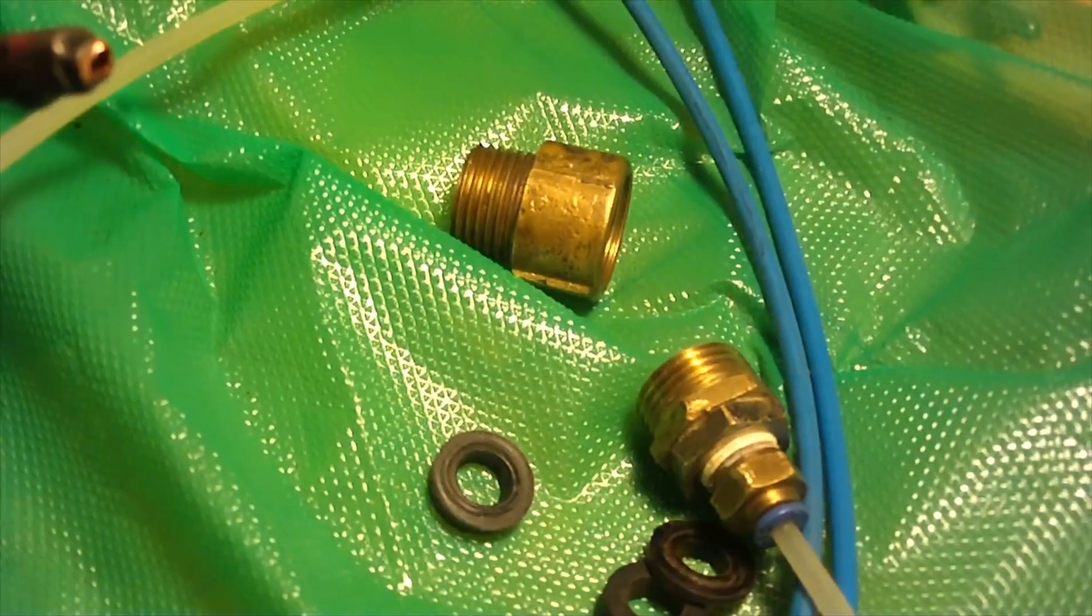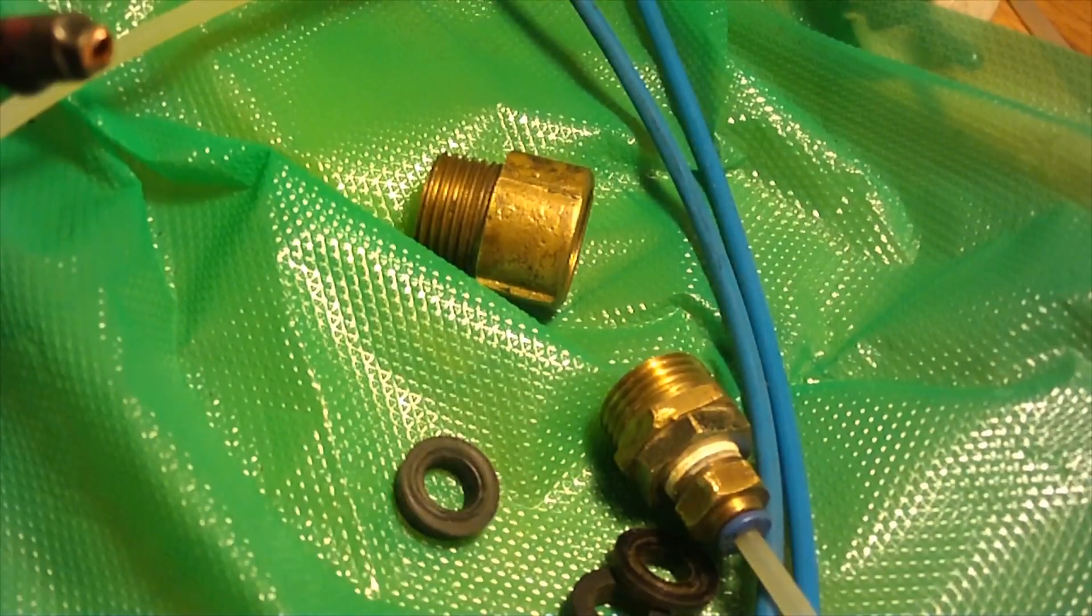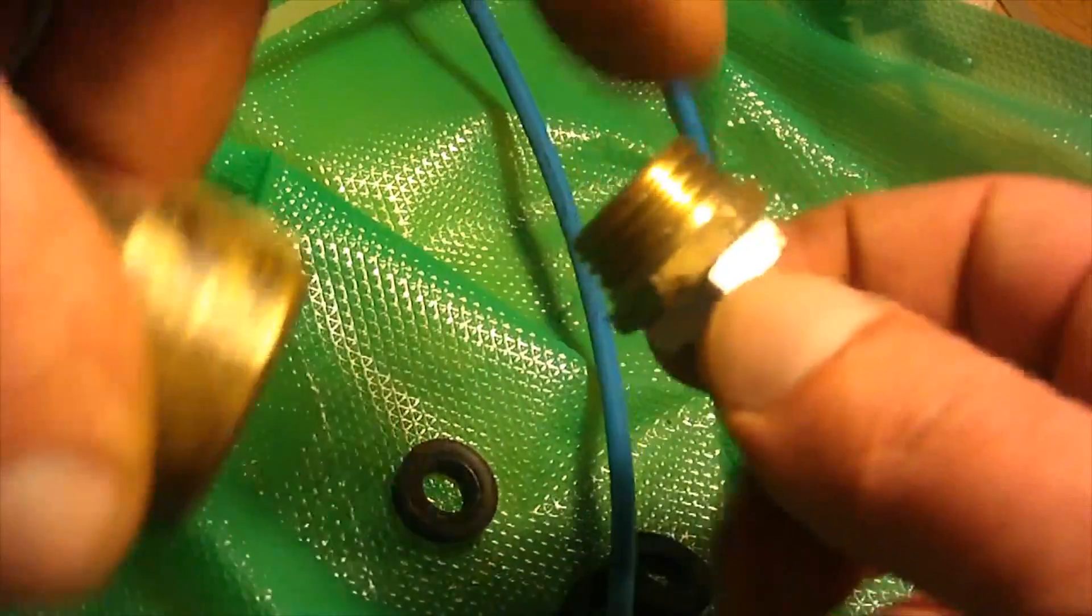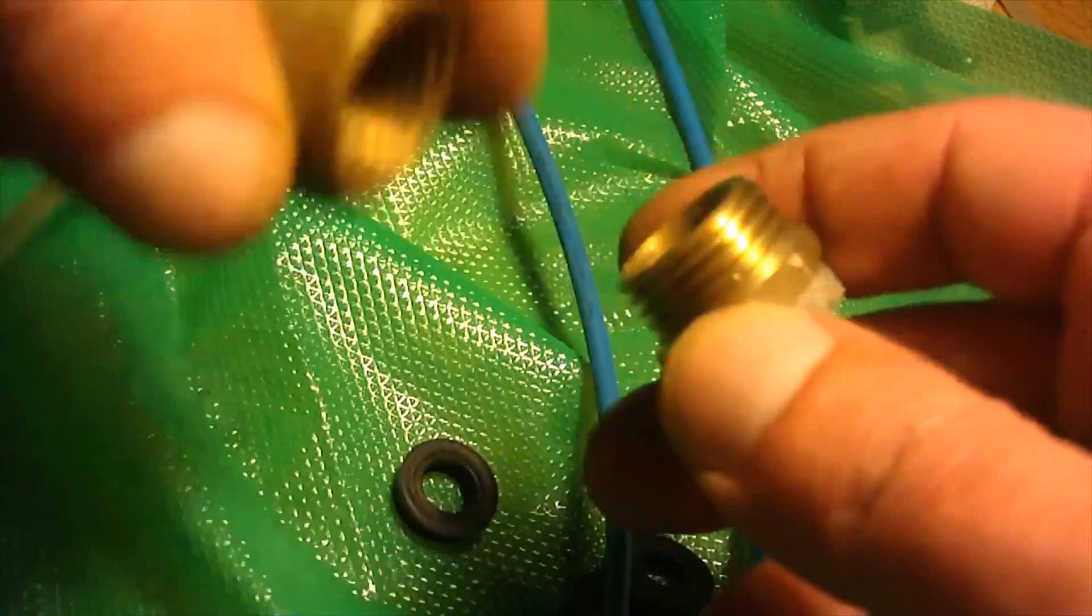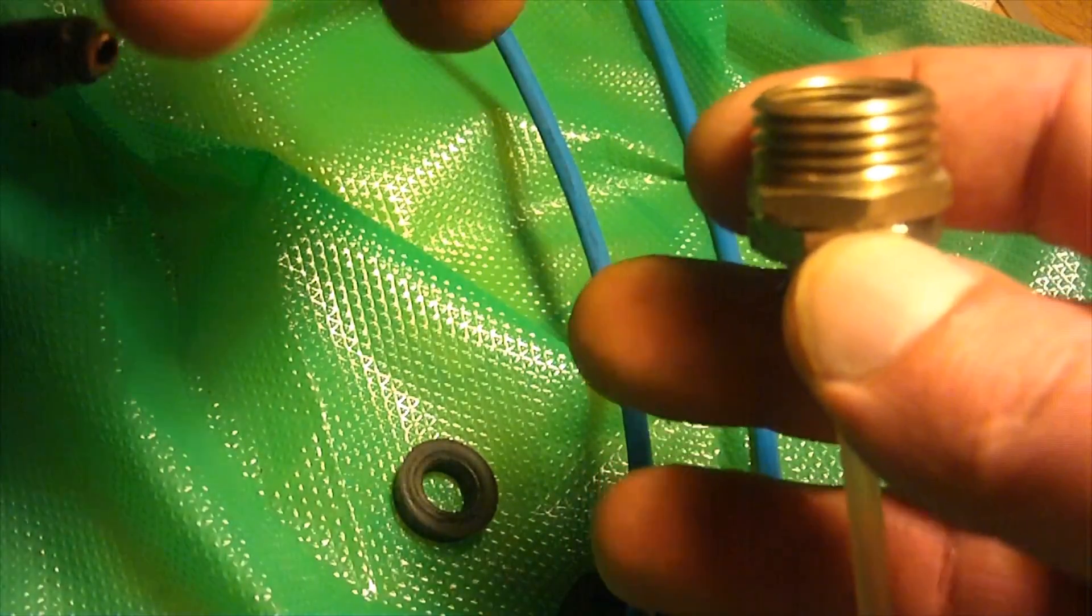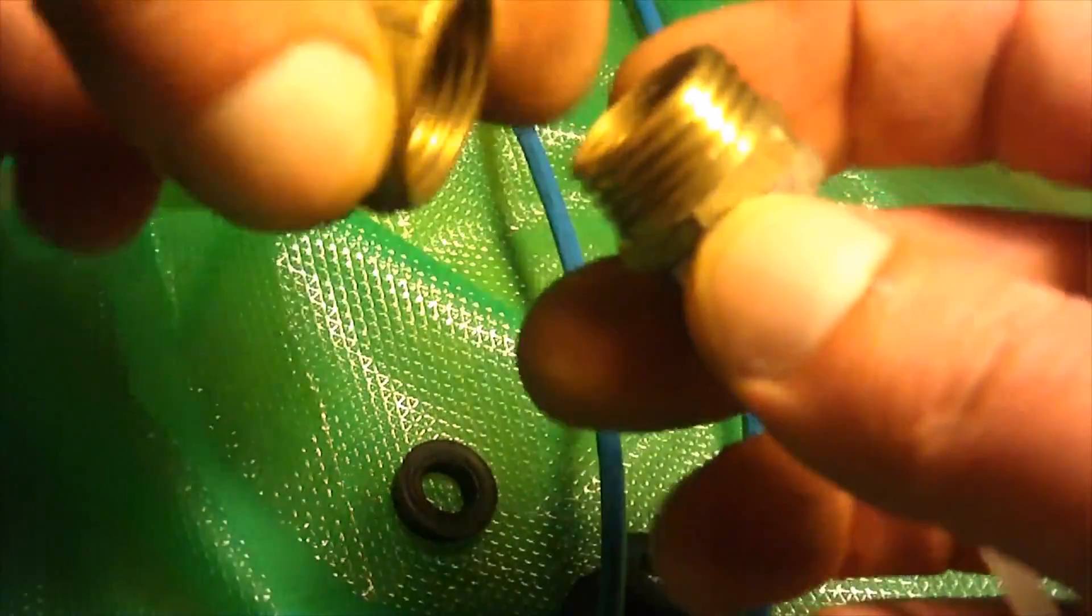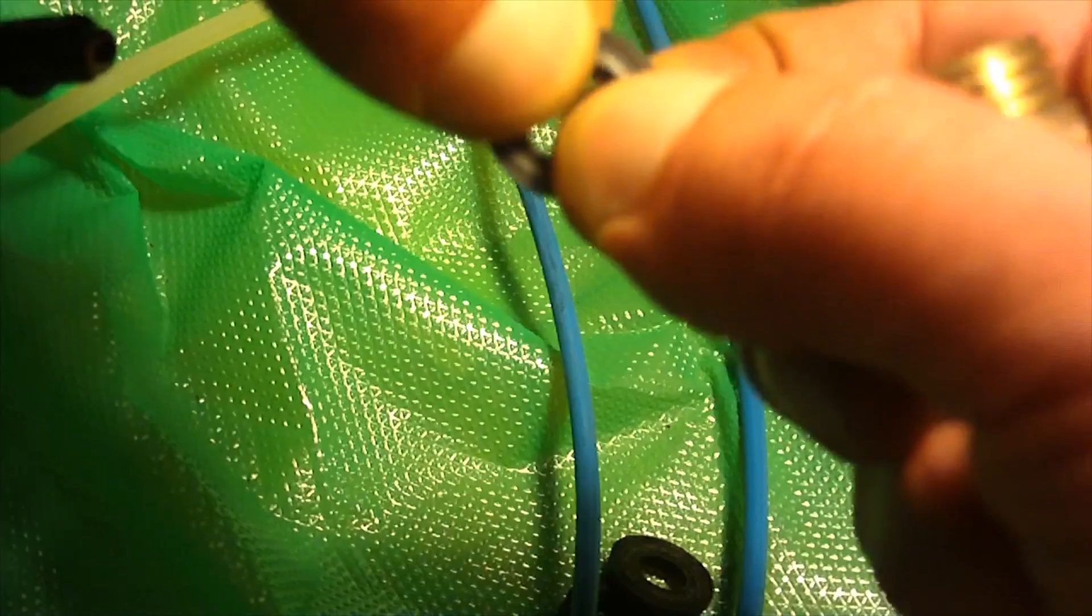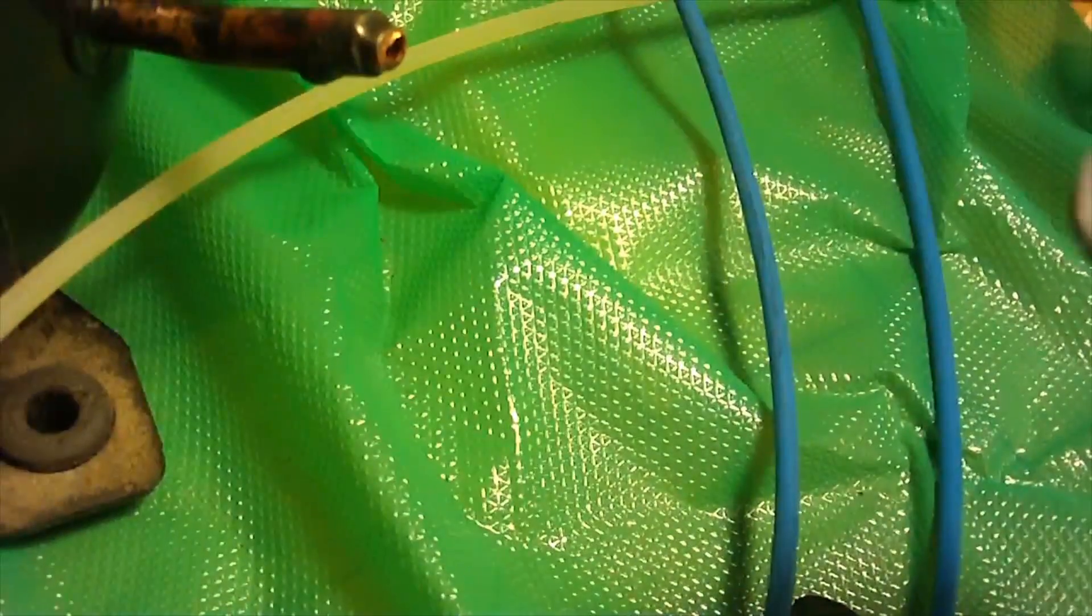The method works surprisingly well and it's very simple. You basically need two fittings. Two fittings or actually two faces that will be brought together and will squeeze rubber washers so that they will expand and wrap around the tube.